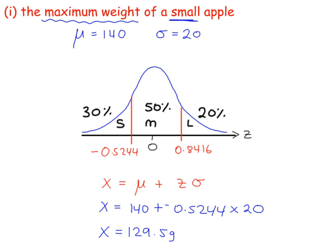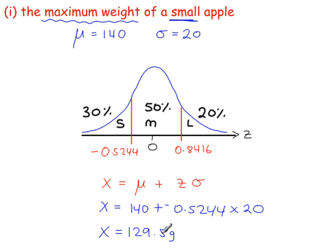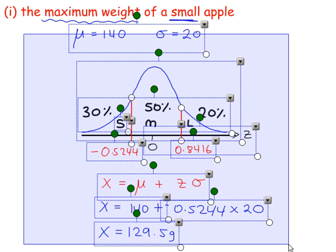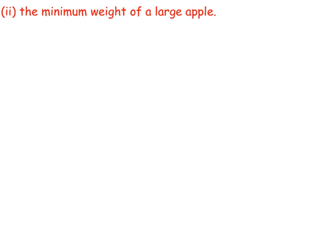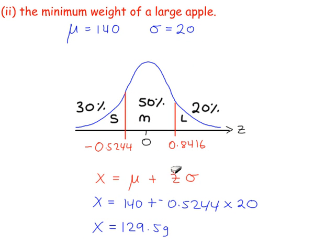Now, the second calculation, which is this, the minimum weight of a large apple, is almost identical to what we've done here. Except we're going to use this Z value here. So if I just copy all of this working out and then make a few changes. So I don't need the Z value that I had from the previous calculation or its answer there.